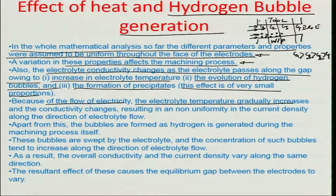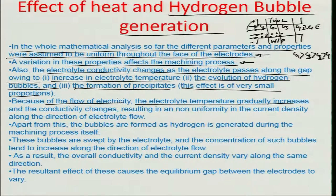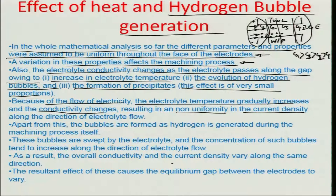So far we assumed constancy in the tool or work piece phase temperature when we did the heat analysis, but we never considered the fact that the temperature of the electrolyte at the inlet and as it passes by could be quite different. Obviously there are going to be changes in the machining removal rate from the inlet zone all the way to the end zone, depending on the direction of the electrolyte flow. The conductivity changes would result in a non-uniformity in the current density, and since current density is proportional to the material removal rate, the MRR would get changed substantially in the direction of the electrolyte flow.